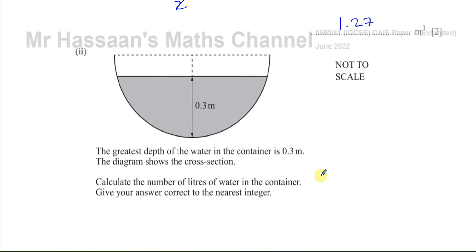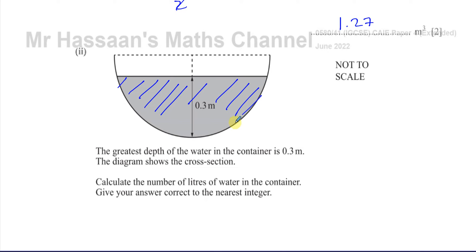Then part 2 says the greatest depth of the water in the container is 0.3 meters. The diagram shows the cross-section. Calculate the number of liters of water in the container, giving your answer correct to the nearest integer. So we need to find the volume of water in this container.